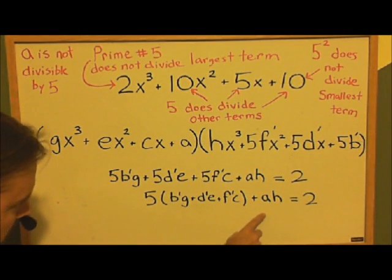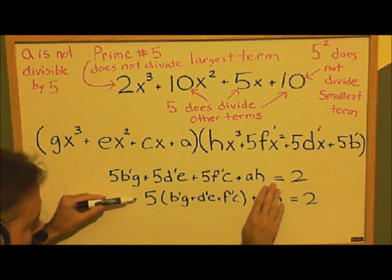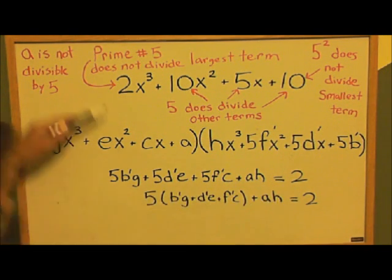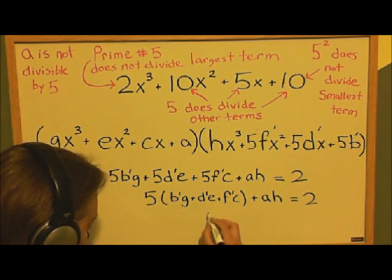If we assume that h equals 0, then this term goes away. So now this side is divisible by 5. But this side—the 2 we set up here—is not divisible by 5. So that shows us that h is not equal to 0.